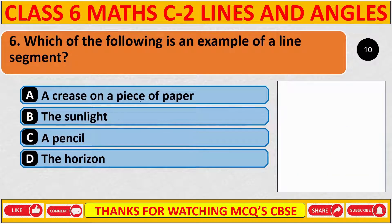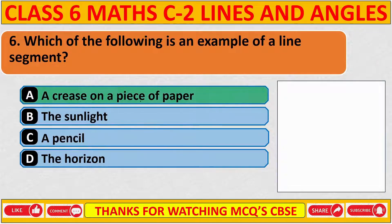Which of the following is an example of a line segment? The correct answer is A: a crease on a piece of paper.